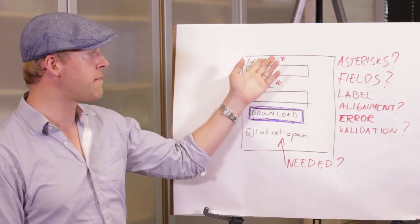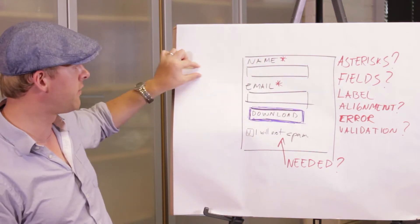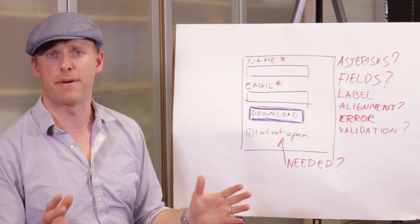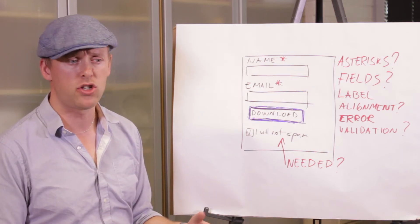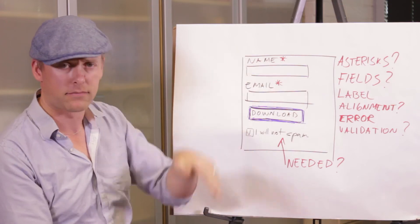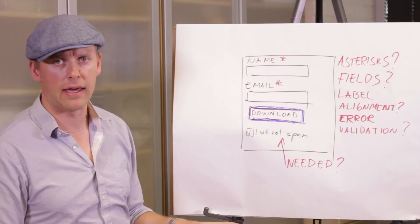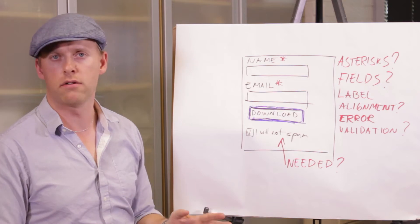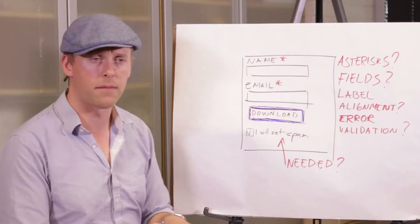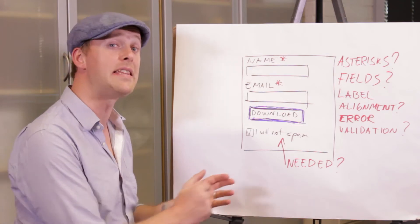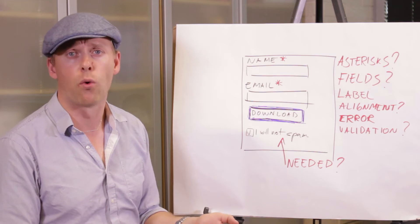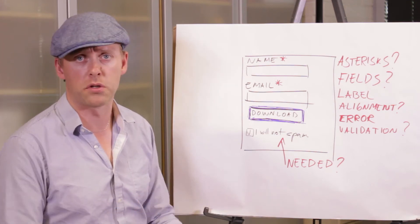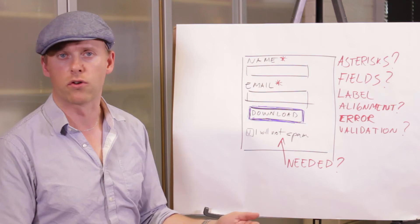Label alignment. So form labels can be top, left aligned, or inline inside the form field. Now typically top align like in this example is the best way to go. It leads to least eye fixations. Sure it does make the form taller, but typically that's okay. Inline form labels, not a really good idea. It's alright if it's just a single form field, but if it's more fields, people start typing and then wonder what was this field, and then you need to delete everything to see what it was for. So I would recommend top align first, and then you can experiment with other placements. Of course A/B test everything.